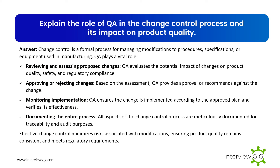Explain the role of QA in the change control process and its impact on product quality. Change control is a formal process for managing modifications to procedures, specifications, or equipment used in manufacturing. QA plays a vital role by reviewing and assessing proposed changes to evaluate their potential impact on product quality, safety, and regulatory compliance; approving or rejecting changes based on the assessment; monitoring implementation to ensure the change is implemented according to the approved plan; and documenting the entire process for traceability and audit purposes. Effective change control minimizes risks associated with modifications, ensuring product quality remains consistent and meets regulatory requirements.